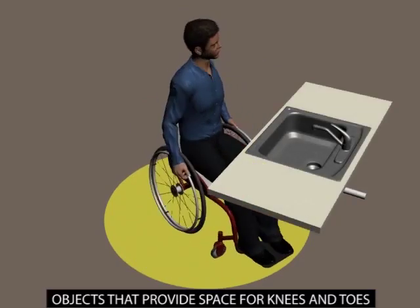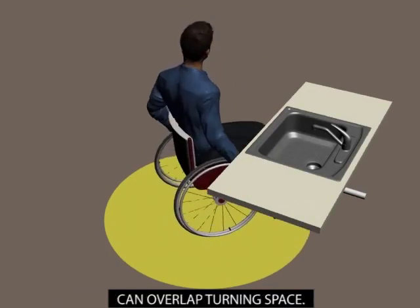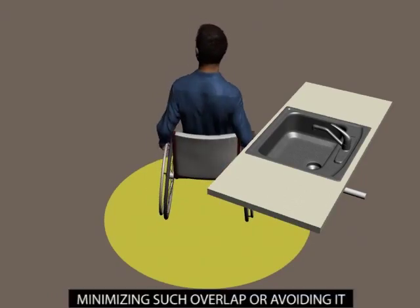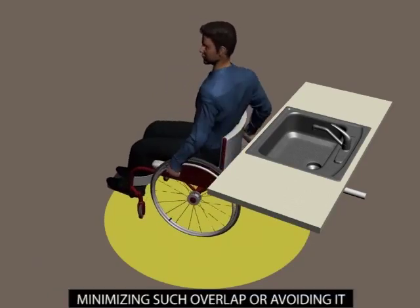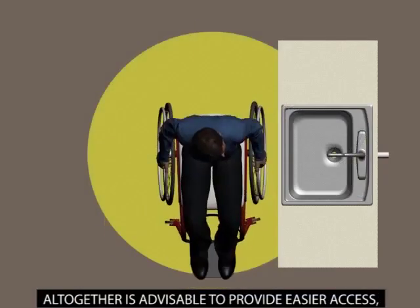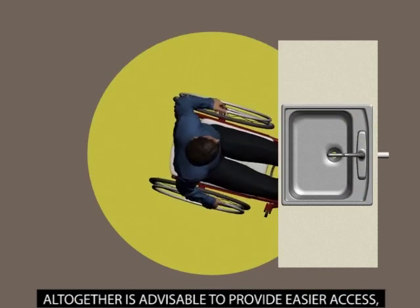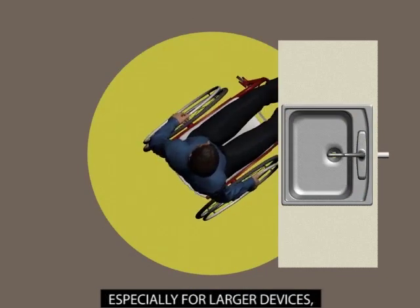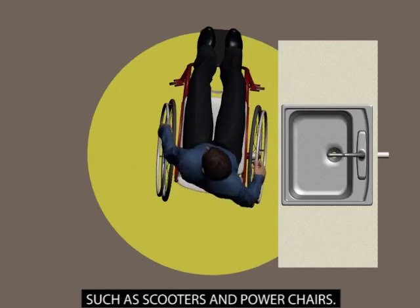Objects that provide space for knees and toes can overlap turning space. Minimizing such overlap or avoiding it altogether is advisable to provide easier access, especially for larger devices such as scooters and power chairs.